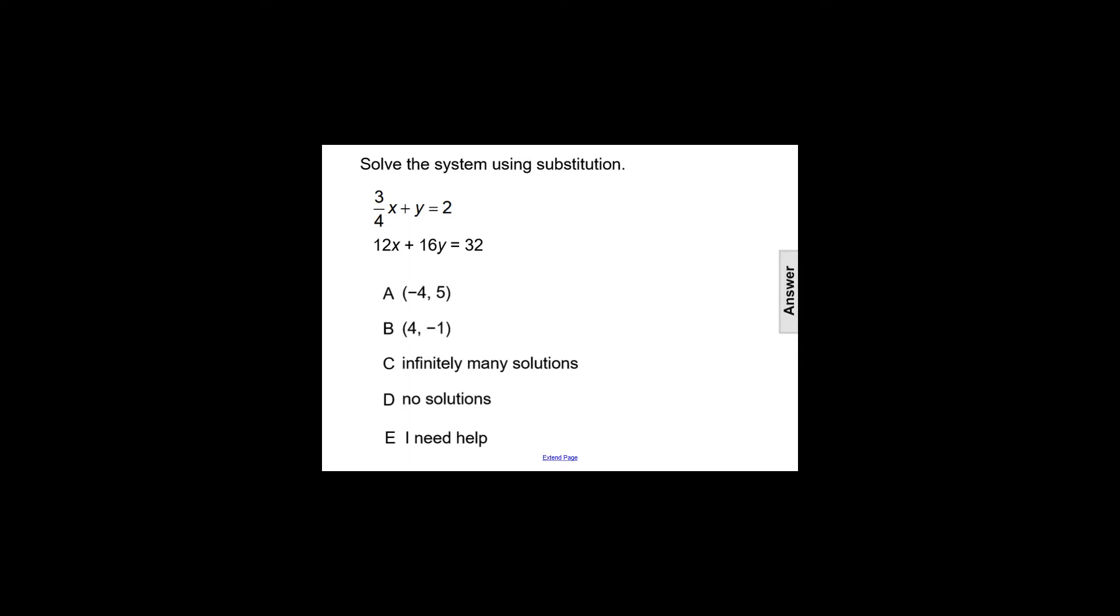To solve this system using substitution, the first thing we need to do is have one of the equations in the system have a variable solved for, or a variable all by itself. Neither of these equations currently have a variable by themselves.